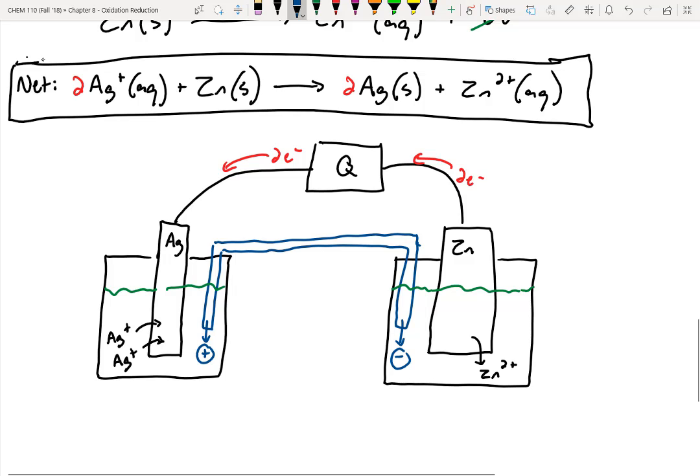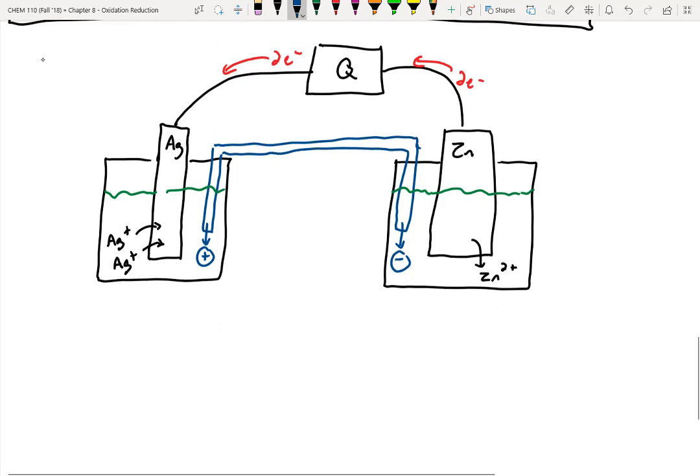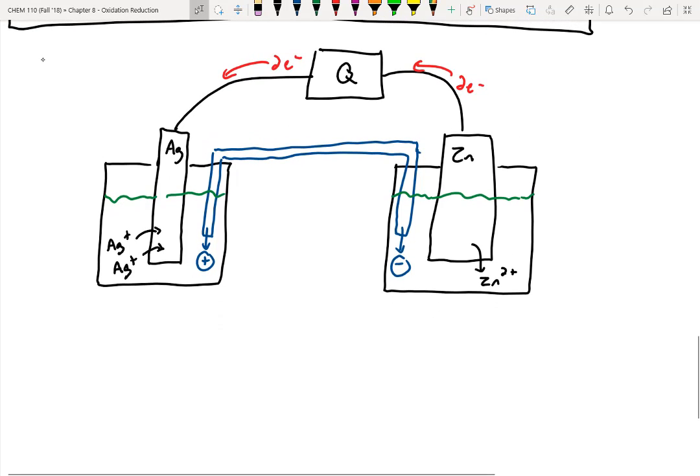So now let's break it down even further. With silver, were we gaining or losing electrons? Looks like we're gaining electrons. On this one we lost electrons. If we gained electrons that means we must have been reduced, or on this side it was oxidized.